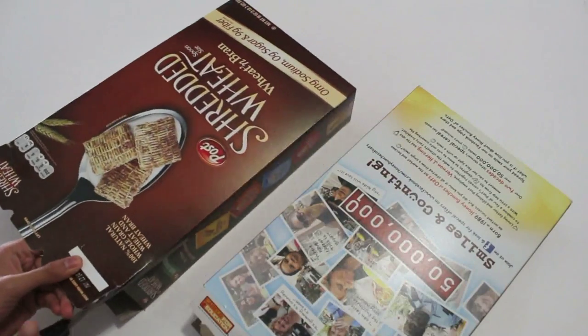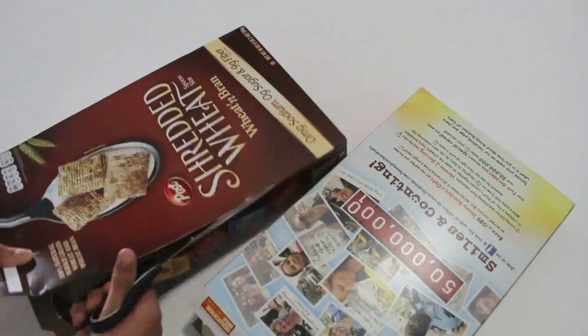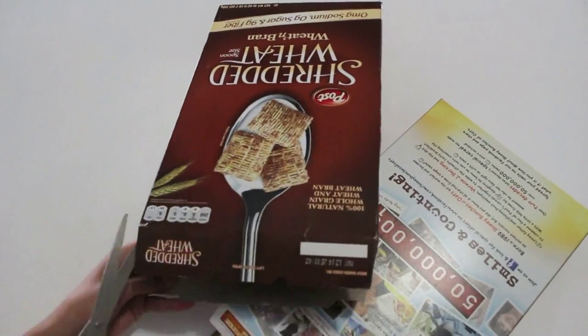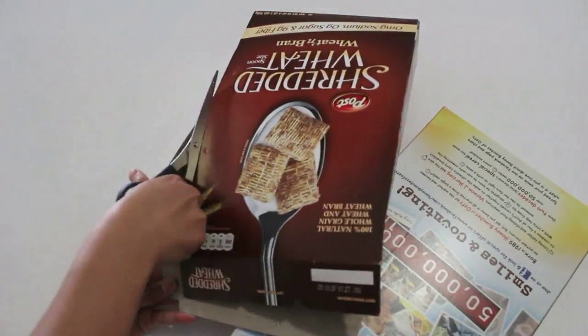First, we are going to make a flap out of one of the large faces, so start cutting on the parallel edges. And do the same to the other box.